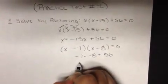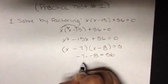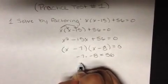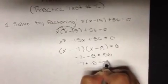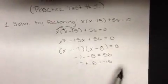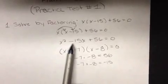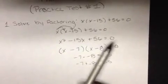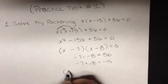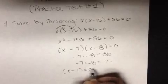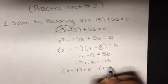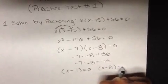Negative 7 plus negative 8 equals negative 15, so I can get the x squared minus 15x plus 56 equals 0. Then I'm going to take x minus 7 and equal it to 0, and take x minus 8 and also equal it to 0.